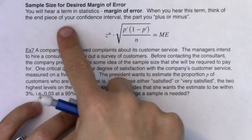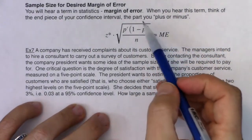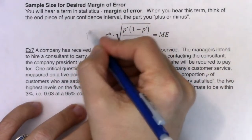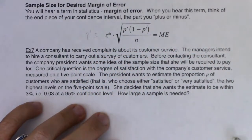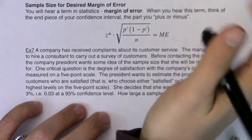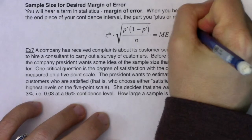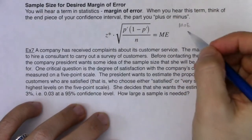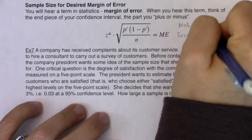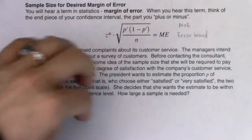When you hear the term margin of error, think of the end piece of your confidence interval — the part that you plus or minus. So this formula right here is everything we add to our statistic. In a confidence interval, you have P prime plus or minus this thing, and this thing is called a margin of error. Your book uses the abbreviation ME; I tend to use MOE. Some folks will use the term error bound. So you've got three ways of referencing the same piece of your confidence interval — everything after the plus or minus.